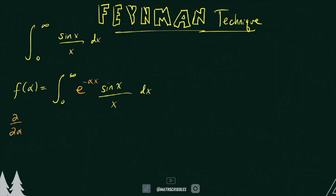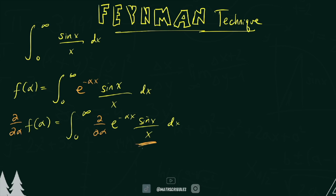We're going to take the partial derivative of this function in terms of alpha. If you're not familiar with partial derivatives, that's okay. All you really have to know is that when we take the derivative, it's almost like implicit differentiation, but you treat the x value as a constant. So we're taking the derivative in terms of alpha, and all other variables are treated as constants. The sin(x)/x term has nothing to differentiate because it's not in terms of alpha, so all we have is that constant sin(x)/x times the derivative of that exponential term.